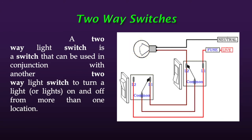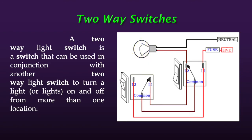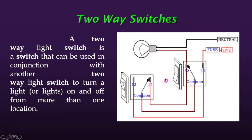You will choose a switch rated more than that calculated current so it does not get damaged within that range. Now, I am discussing the two-way switch. There is a special connection so that a lamp — such as a bed lamp — can be controlled from both switches. The lamp can be turned on or off from either switch.